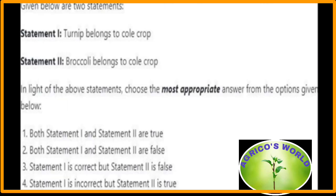Given below are two statements. Statement 1: turnip belongs to cold crop — false; turnip is a root crop, not classified as a cold crop. Statement 2: broccoli belongs to cold crop — yes, broccoli belongs to cold crop. From the given options, the most appropriate answer is the fourth option: statement 1 is incorrect but statement 2 is true.